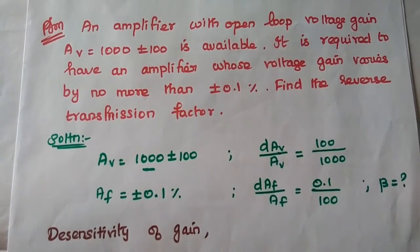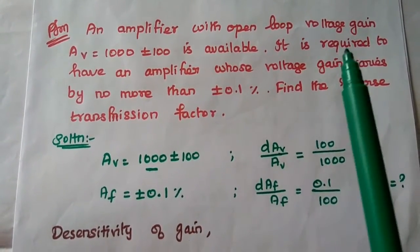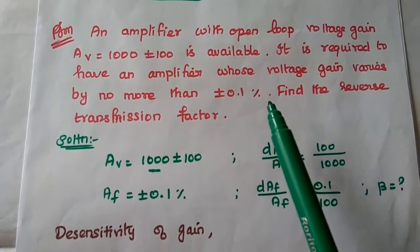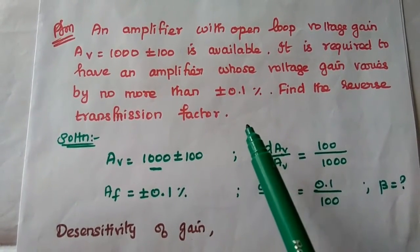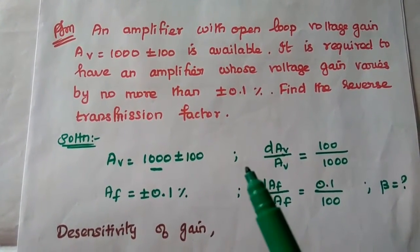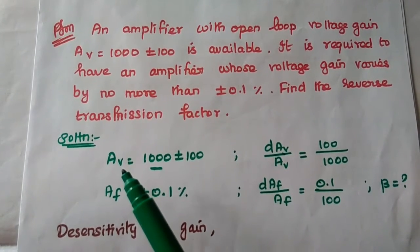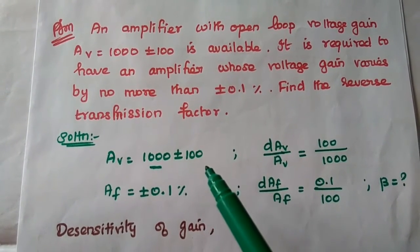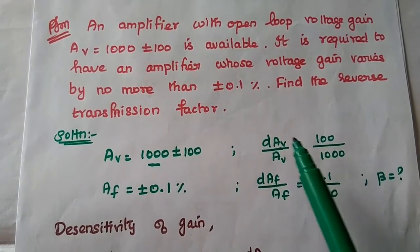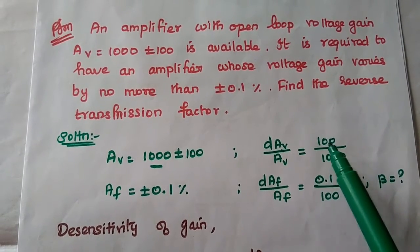The last problem: an amplifier with open loop voltage gain AV = 1000 ± 100 is available. It is required to have an amplifier whose voltage gain varies by no more than ±0.1%. Find the reverse transmission factor (feedback factor β). The fractional change in gain without feedback is DAV/AV = 100/1000.